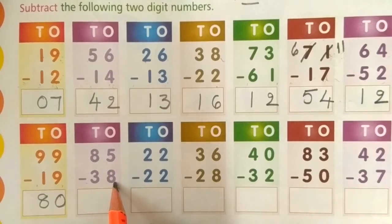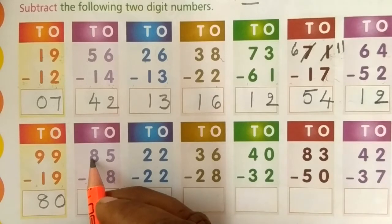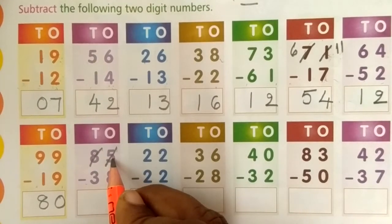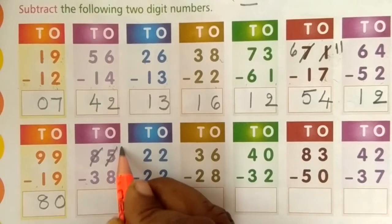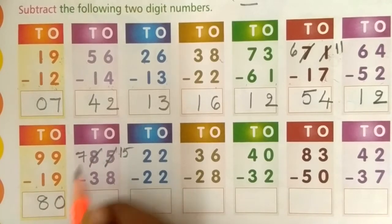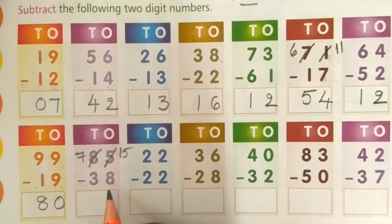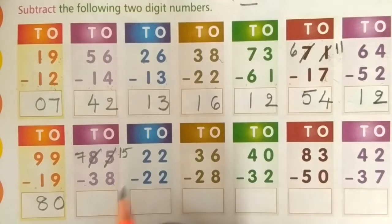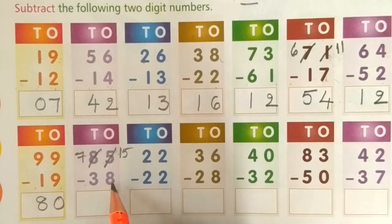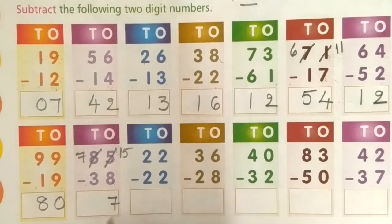Next: 5 minus 8 — is it possible? No. So we have to borrow from the 10's place to the 1's place. 10 plus 5 is 15. From the 10's place, 8 minus 1 is 7. Now backward counting: after 8, count up to 15 — 9, 10, 11, 12, 13, 14, 15. How many fingers? 7. So 7 is the answer.